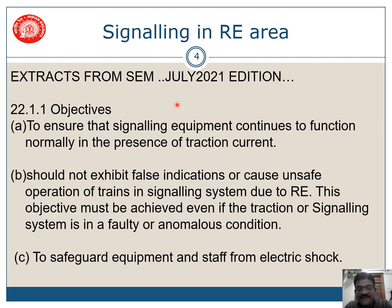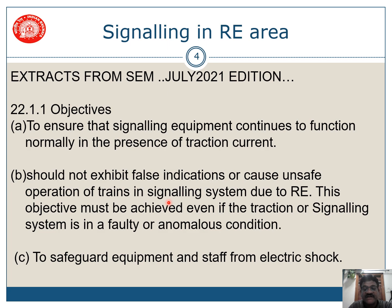What are the extracts as per the Signal Engineering Manual, the latest edition of 2021? The main objectives are: first, to ensure that the signaling equipment continues to function normally in the presence of traction current. Second, it should not exhibit false indications or cause unsafe operation of trains in the signaling system due to RE. Normal RE supply availability should be maintained in the signaling system.